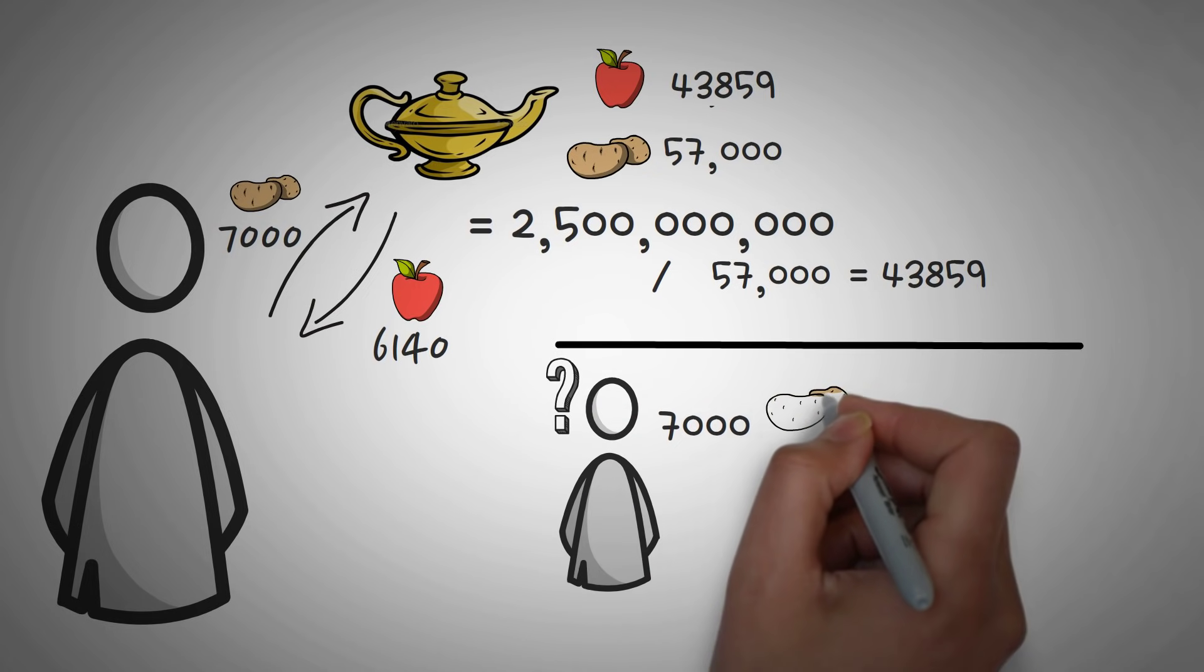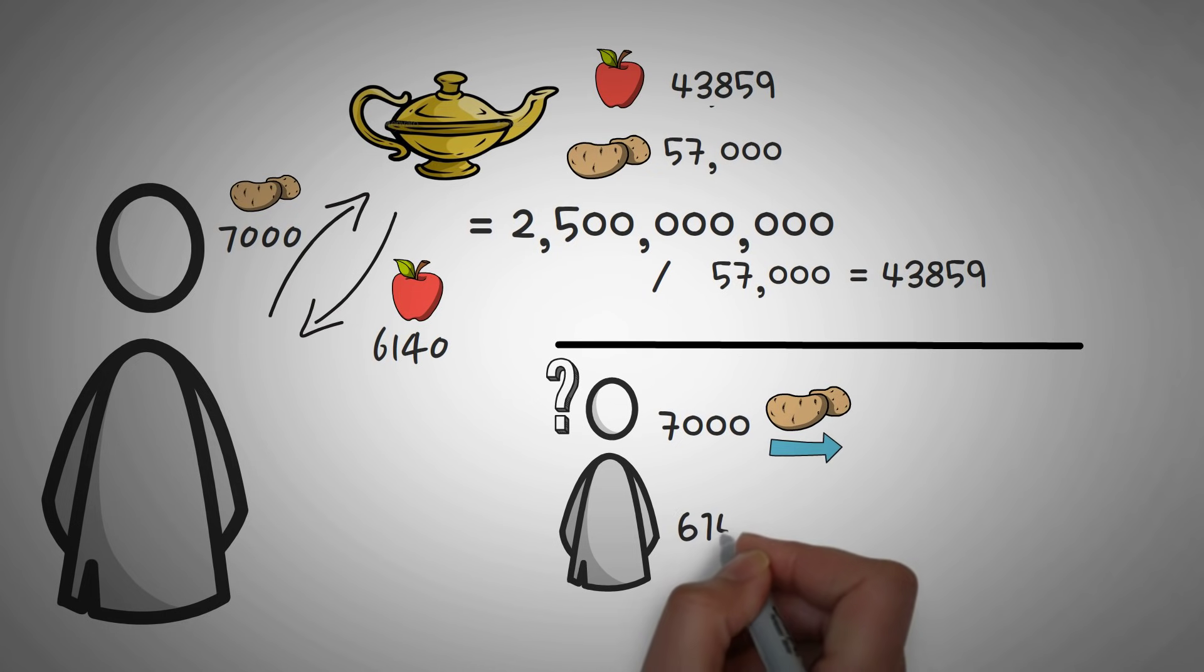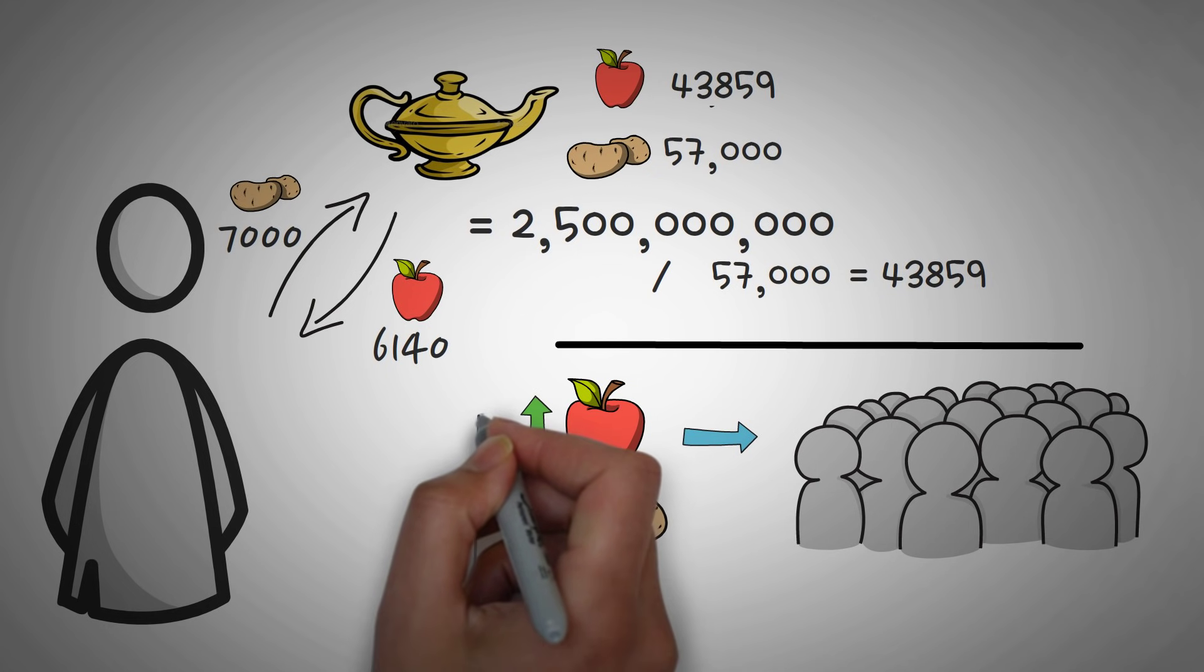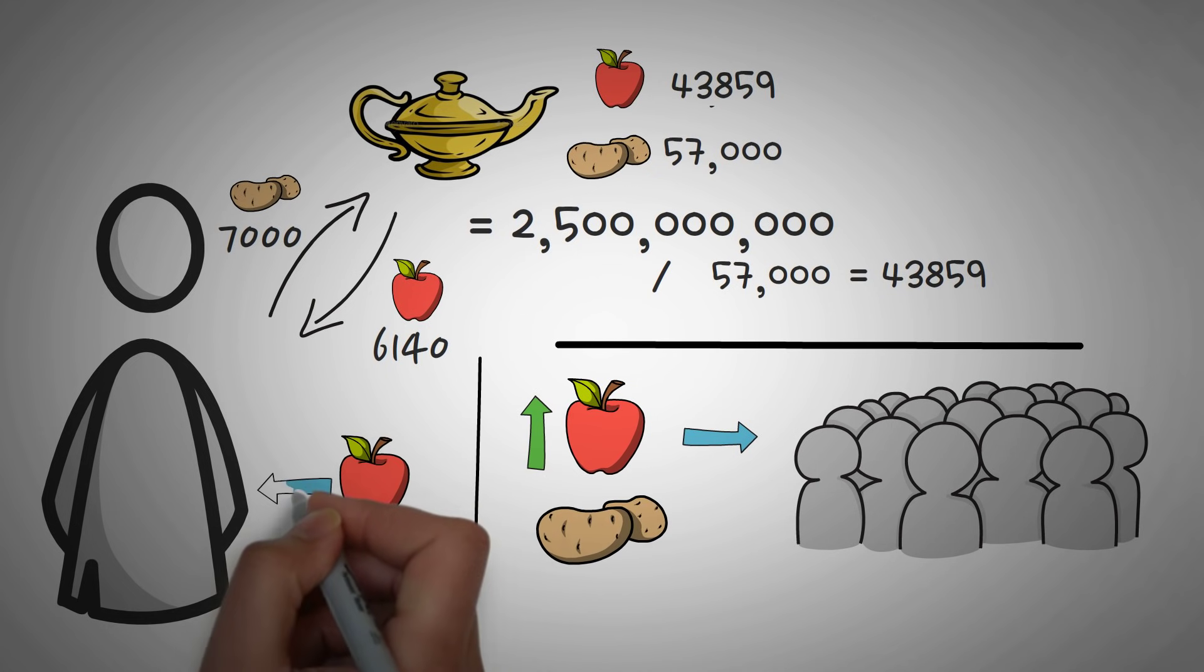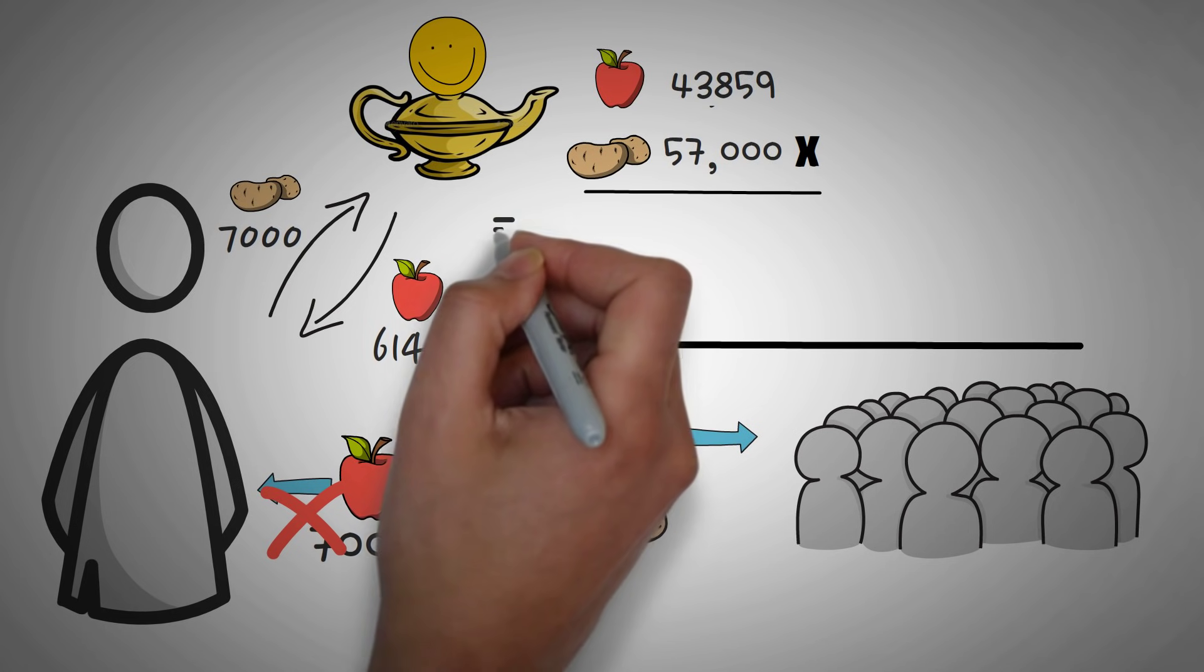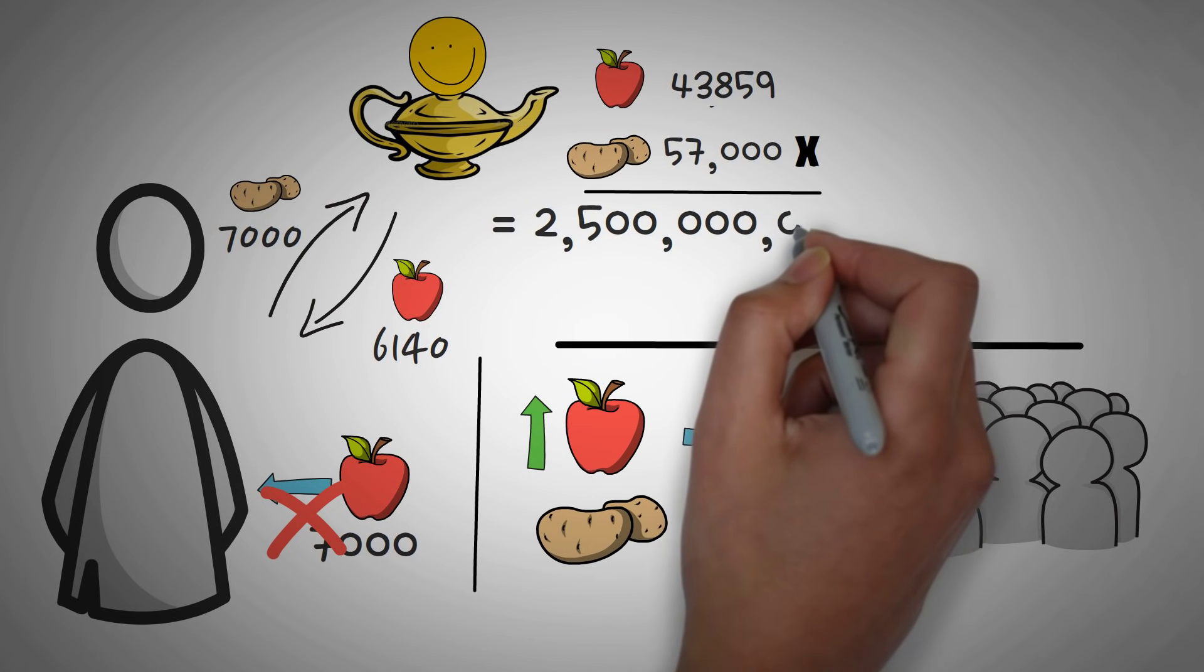Now you might be wondering, how come we gave 7,000 potatoes, but we got around 6,000 apples? Well, as more and more apples were bought up, they became more expensive. This is why the farmer didn't get exactly 7,000 apples back. So now there are 57,000 potatoes and 43,859 apples in the genie's lamp. Let's make sure that we didn't upset the genie. 57,000 times 43,859 does equal 2.5 billion, so the magical genie is still happy.